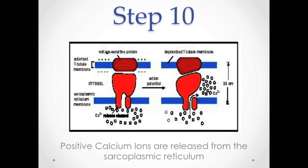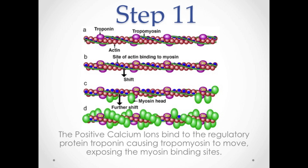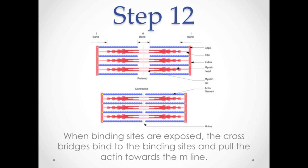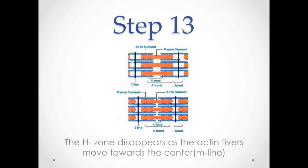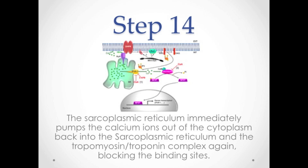Then, positive calcium ions are released from the sarcoplasmic reticulum, and they bind the regulatory protein troponin, causing another protein, tropomyosin, to move. Once the binding sites are exposed, the myosin heads bind to the binding sites and pull the actin, which are thin fibers, towards the M-line. The H-zone then disappears as the actin fibers move towards the M-line.